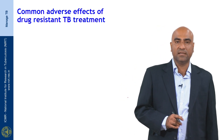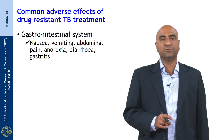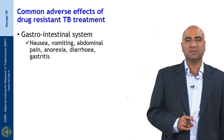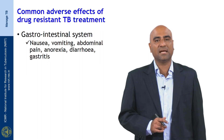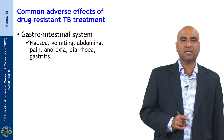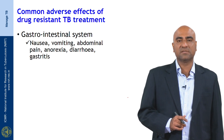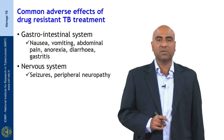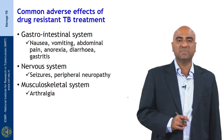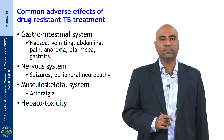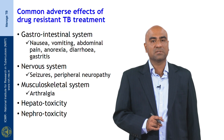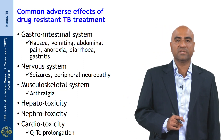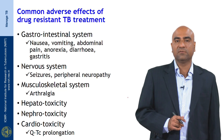Coming to the common adverse effects of drug-resistant TB treatment: the main adverse effect encountered is gastrointestinal intolerance. People have minor symptoms like nausea, mild abdominal pain, vomiting, anorexia, diarrhea, and gastritis. In the nervous system, people can have seizures and peripheral neuropathy. Musculoskeletal system may show transient arthralgia. There can also be hepatotoxicity, nephrotoxicity, and cardiotoxicity in the form of QTc prolongation.